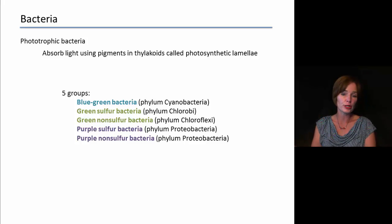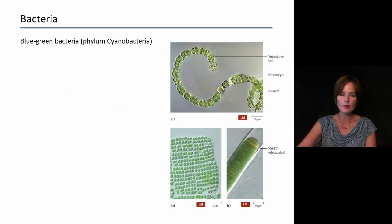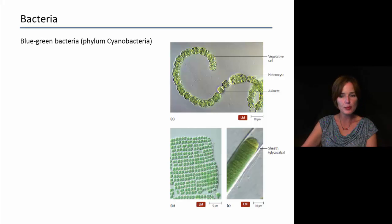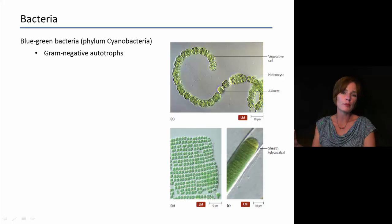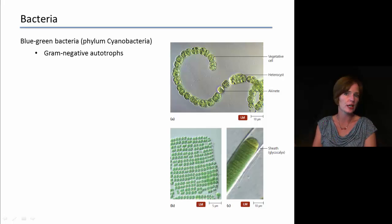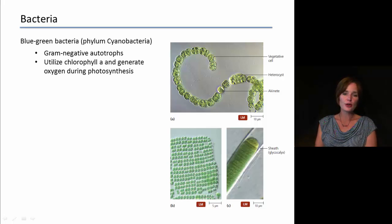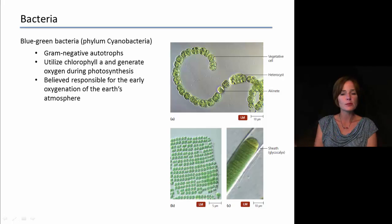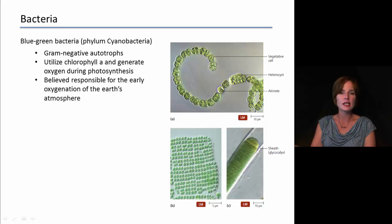The blue-green bacteria, or phylum Cyanobacteria, are called blue-green bacteria because of the pigments present in them. They used to be called blue-green algae because they had characteristics similar to plants. These are gram-negative autotrophs that utilize chlorophyll A and generate oxygen during photosynthesis — characteristics similar to plants. These are thought to have been responsible for early oxygenation of the Earth's atmosphere, producing much of the initial oxygen that entered the atmosphere.